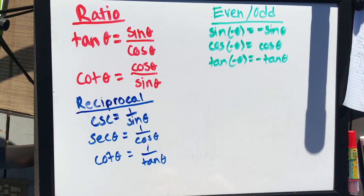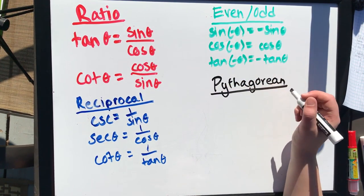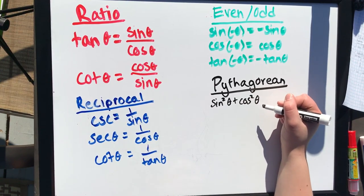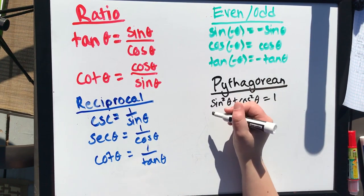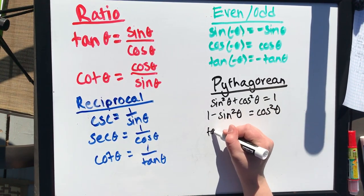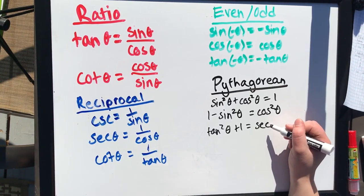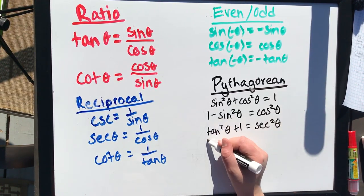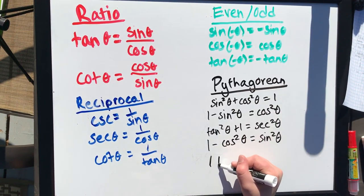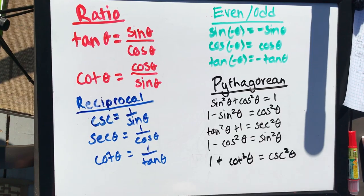And lastly, we have the Pythagorean identities: sine squared theta plus cosine squared theta equals 1; 1 minus sine squared theta equals cosine squared theta; tangent squared theta plus 1 equals secant squared theta; 1 minus cosine squared theta equals sine squared theta; and 1 plus cotangent squared theta equals cosecant squared theta. Those are all of the simpler identities.